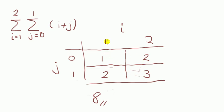I've already completed the table. This is how I did it. When j is zero and i is one this term i plus j will be one. When i is two and j is zero, i plus j will be two. And so on. Adding the four values we get eight. So by using the tables it's not much harder than the single summation case.